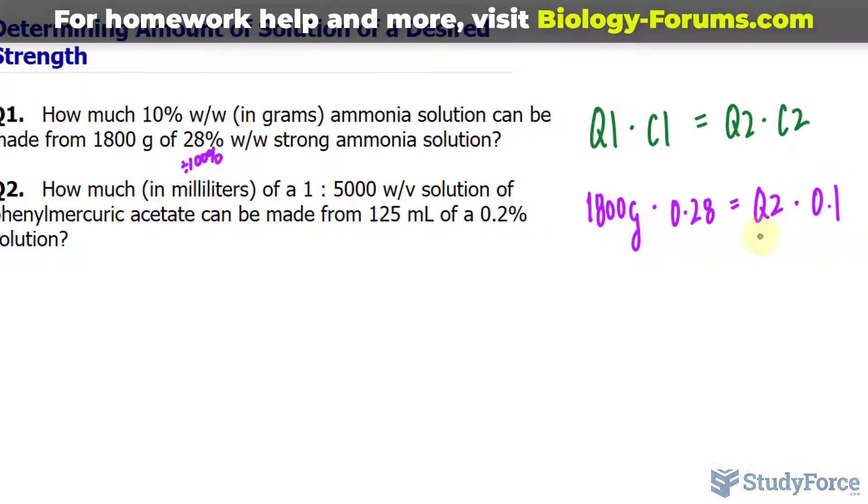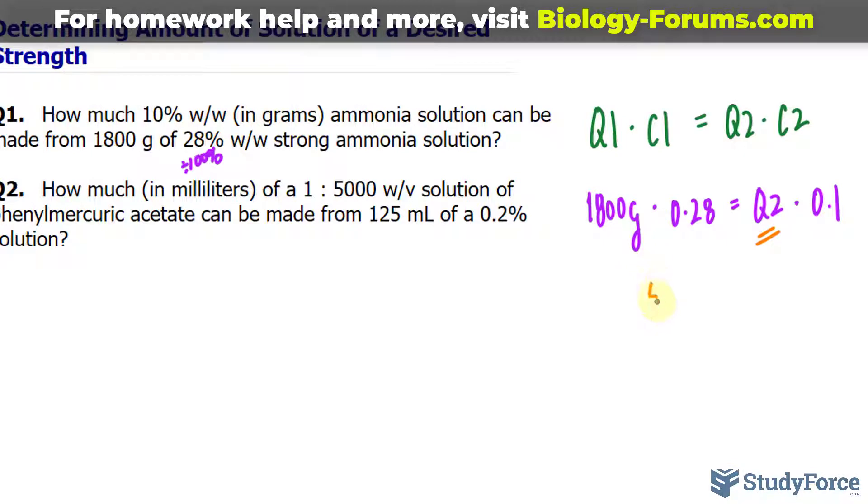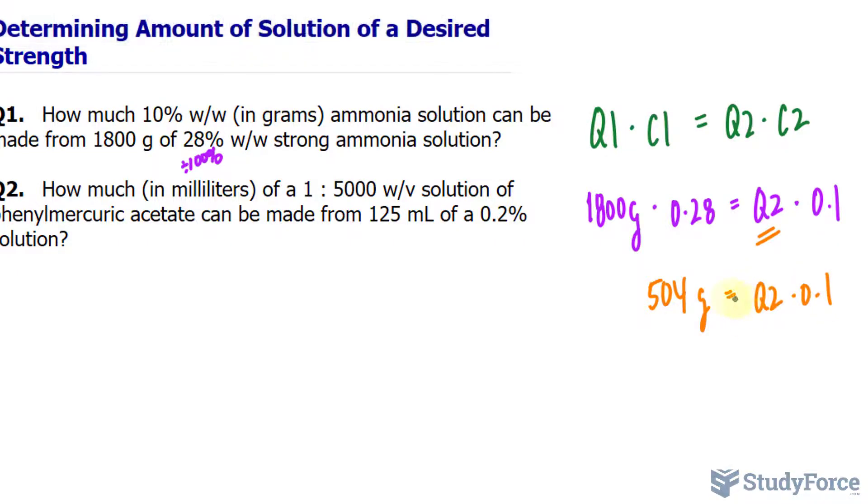Solving for Q sub 2 requires that we multiply the left side. So 1,800 times 0.28 gives us 504. And these two get rewritten. To isolate for Q sub 2, which is the value we're looking for, we divide both sides by 0.1.